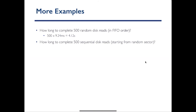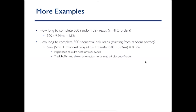Now let's look at the same number of reads but sequential. For the first read, if it's random, you have to seek and pay the rotation delay to get to your specific sector. But from there on, for the rest of the sectors, you don't need to pay seek and rotation — they're sequential after each other. This gives about a 40x performance improvement.